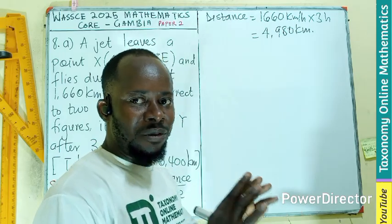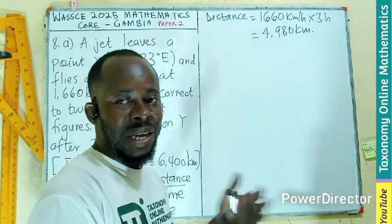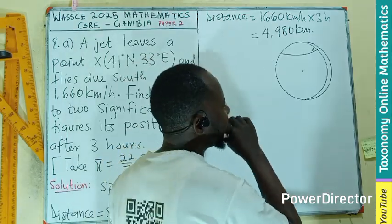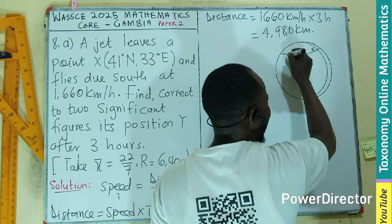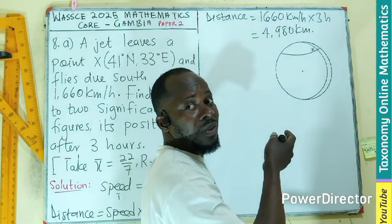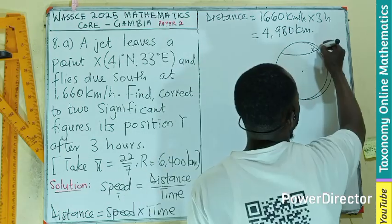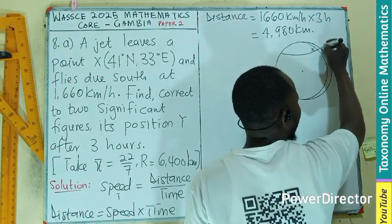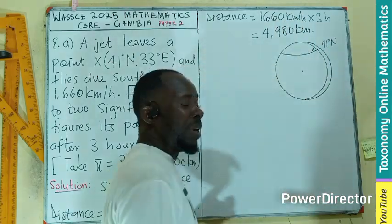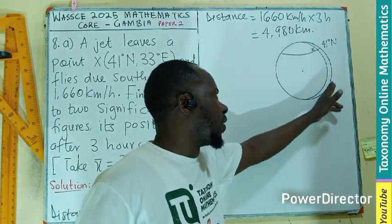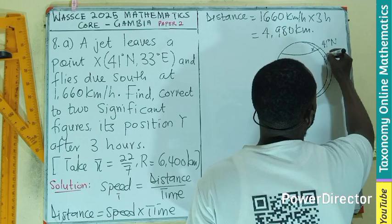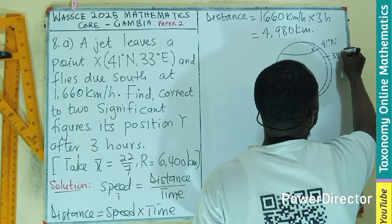Let's make a sketch of the globe and place the position of X and Y and see how we can go from there. So this is our globe — this is going to be the north. The longitude goes from top to bottom, and the latitude goes from left to right. I'm going to have the position X here on latitude 41 degrees north, and the longitude here is 33 degrees east.